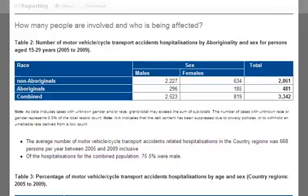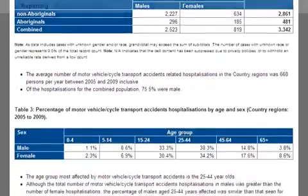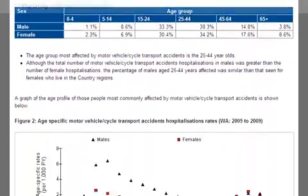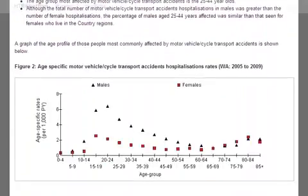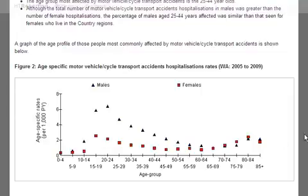Finally, Table 3 and Figure 2 show a breakdown by age and sex. In Figure 2, we see that the 15-29 year old age group is clearly a key target group for motor vehicle accidents.